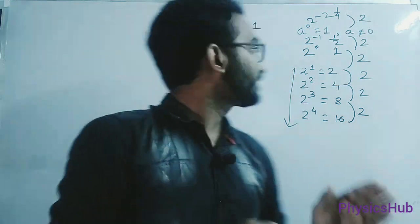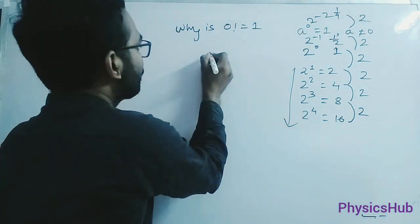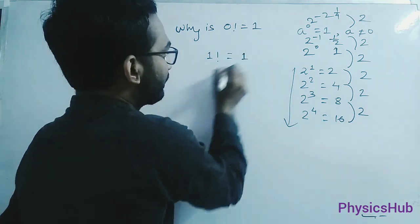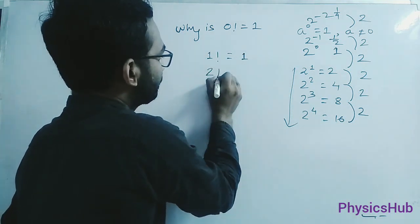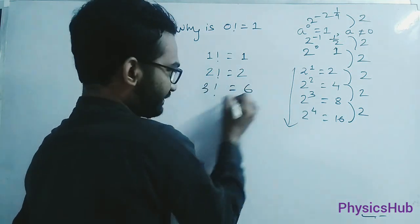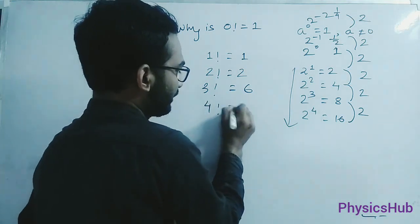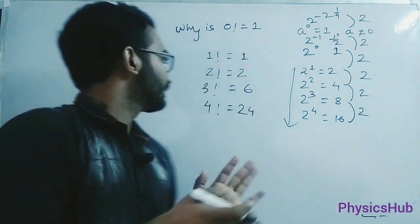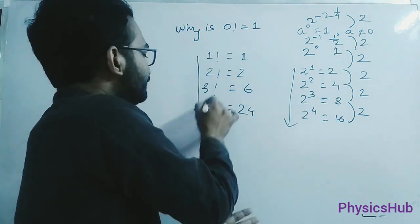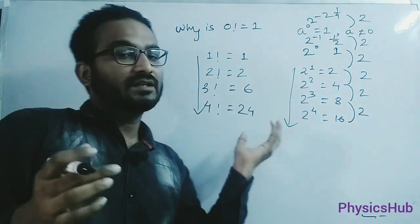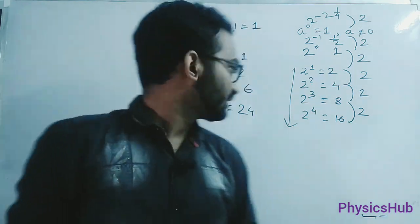Now we will apply the same logic here for this case. So 1 factorial equals to 1, 2 factorial equals to 2, 3 factorial equals to 6, 4 factorial equals to 24. Now we will look into this. As we are increasing, we are going in the forward direction. The value of these factorials are being increased.